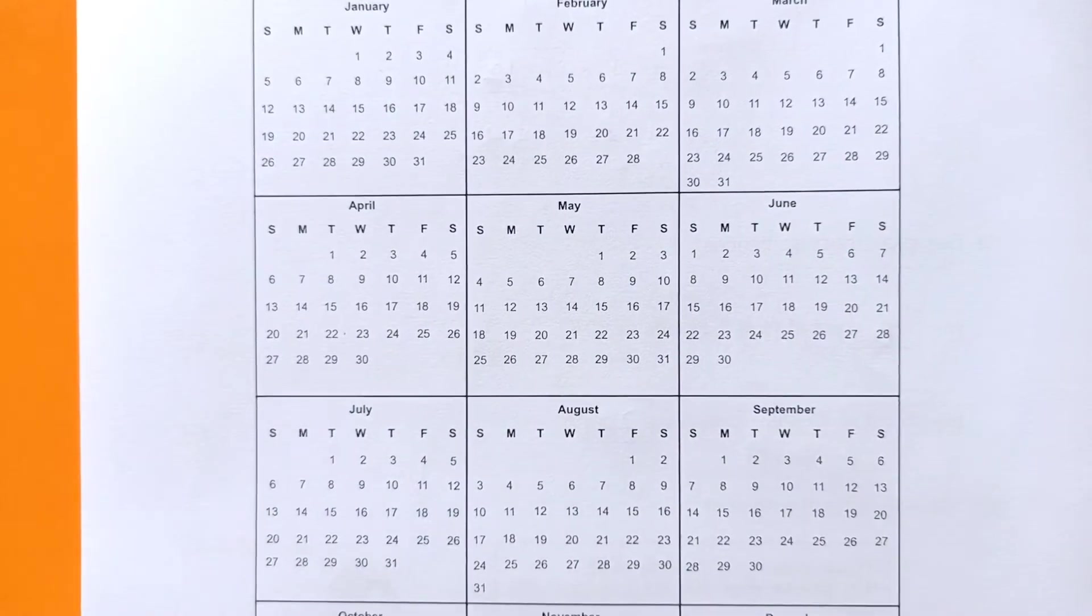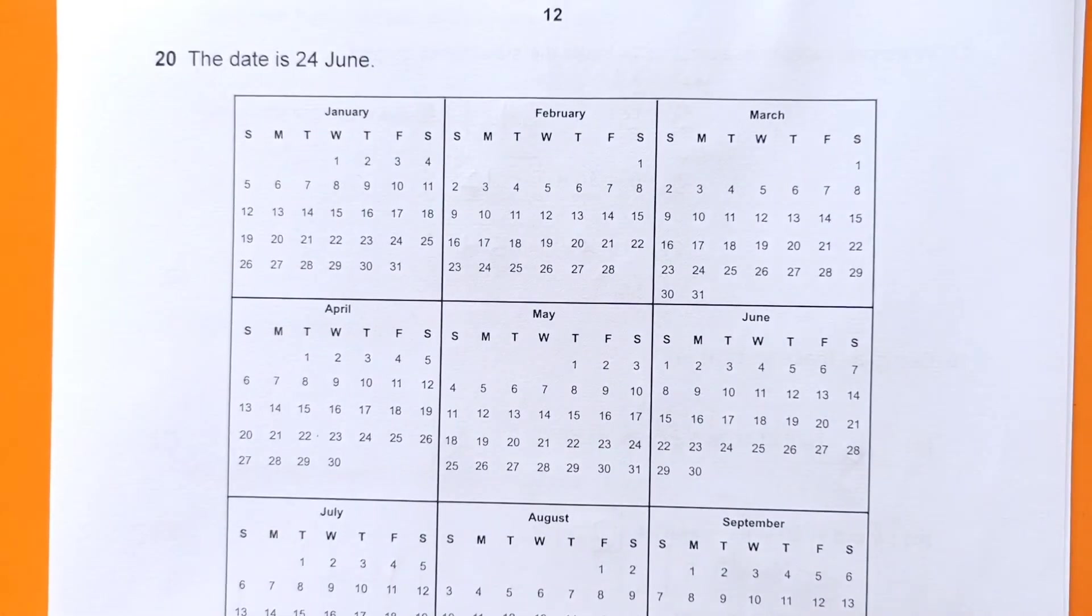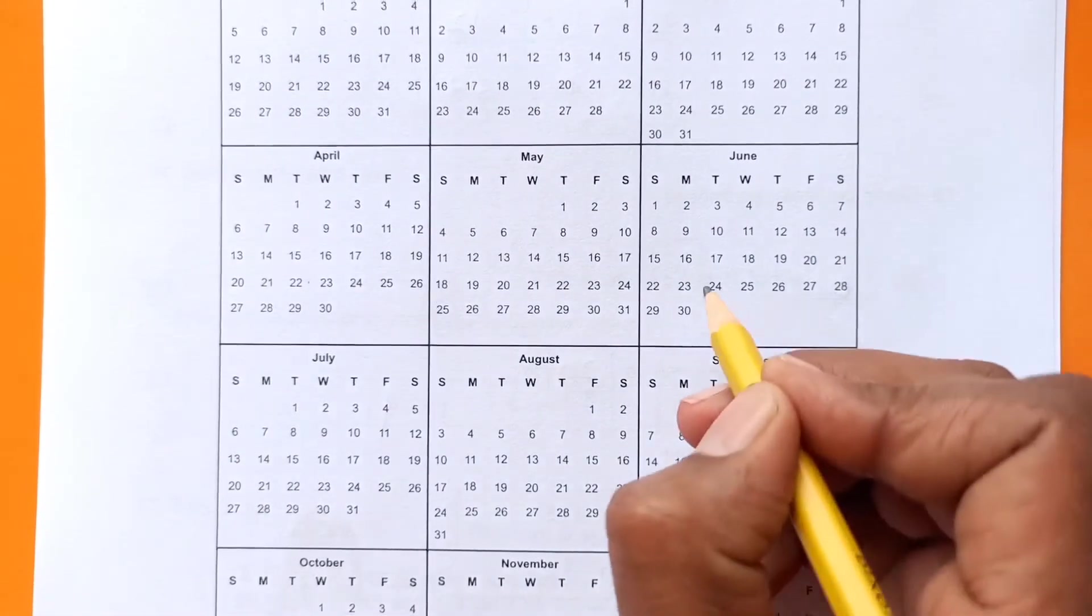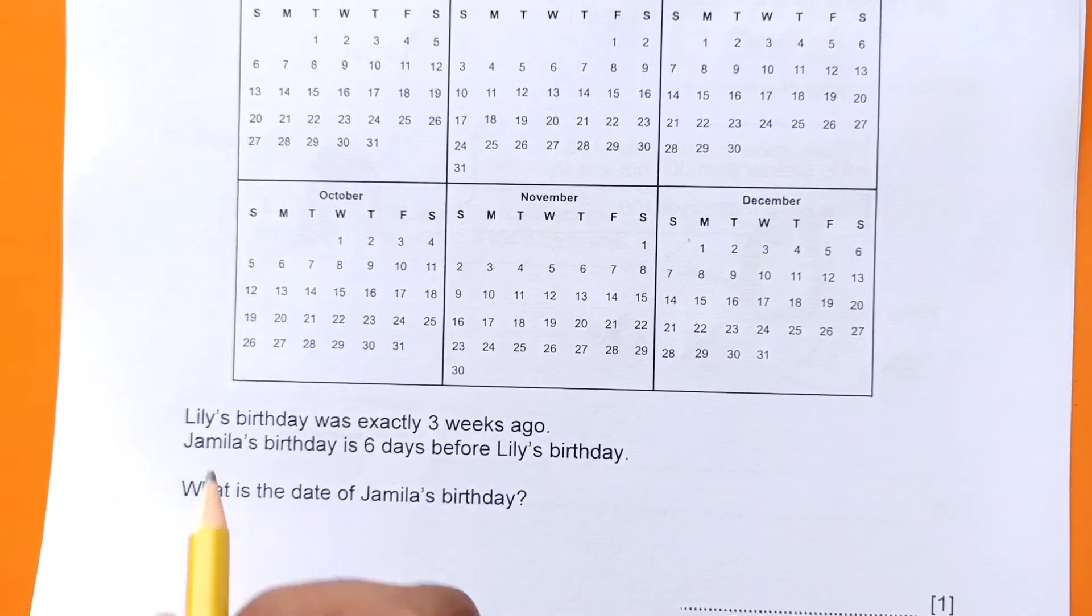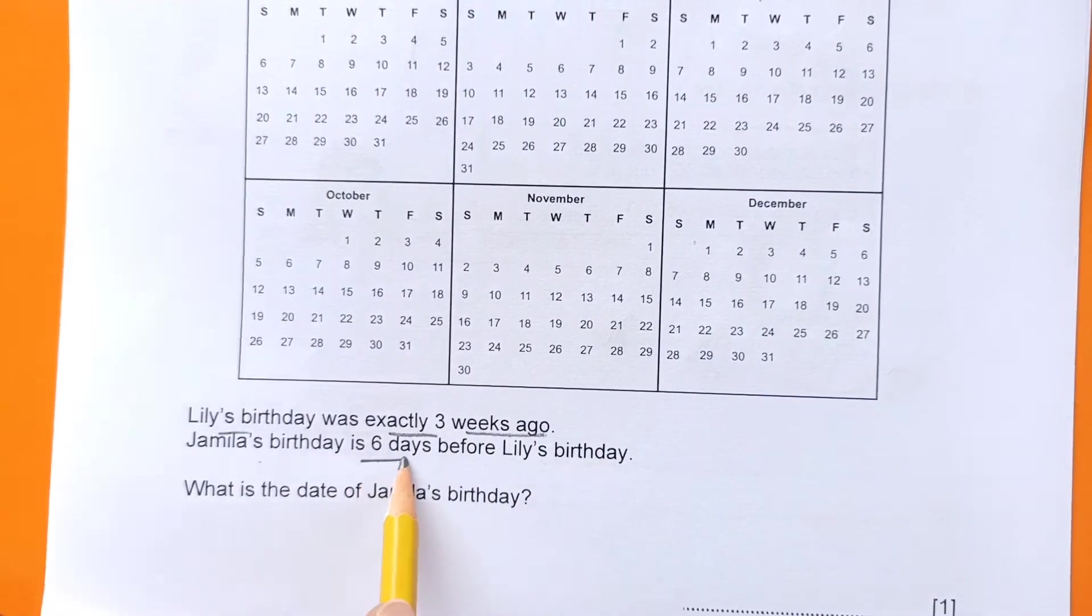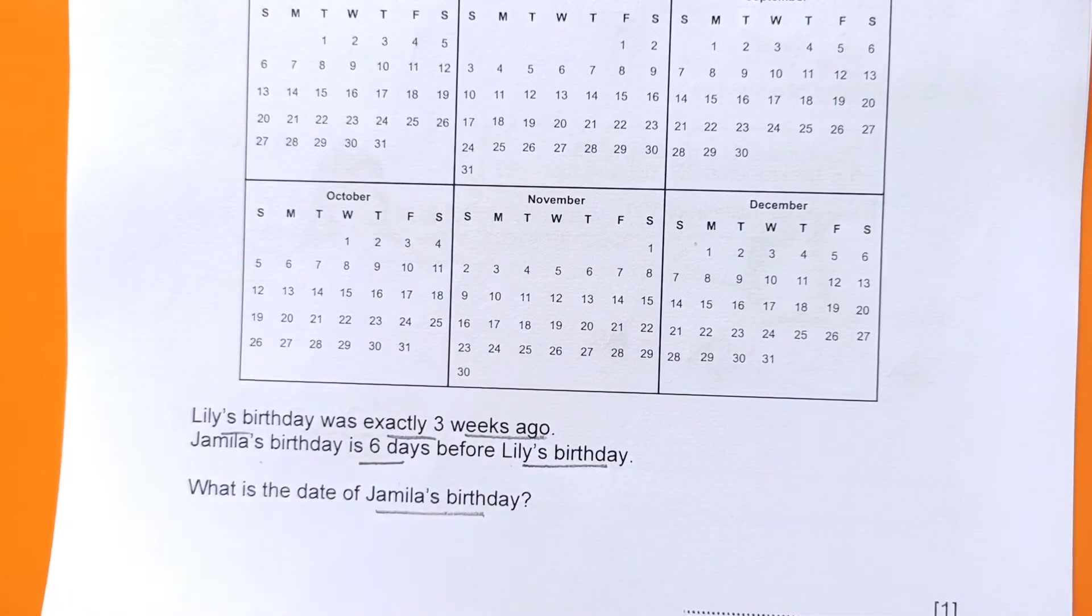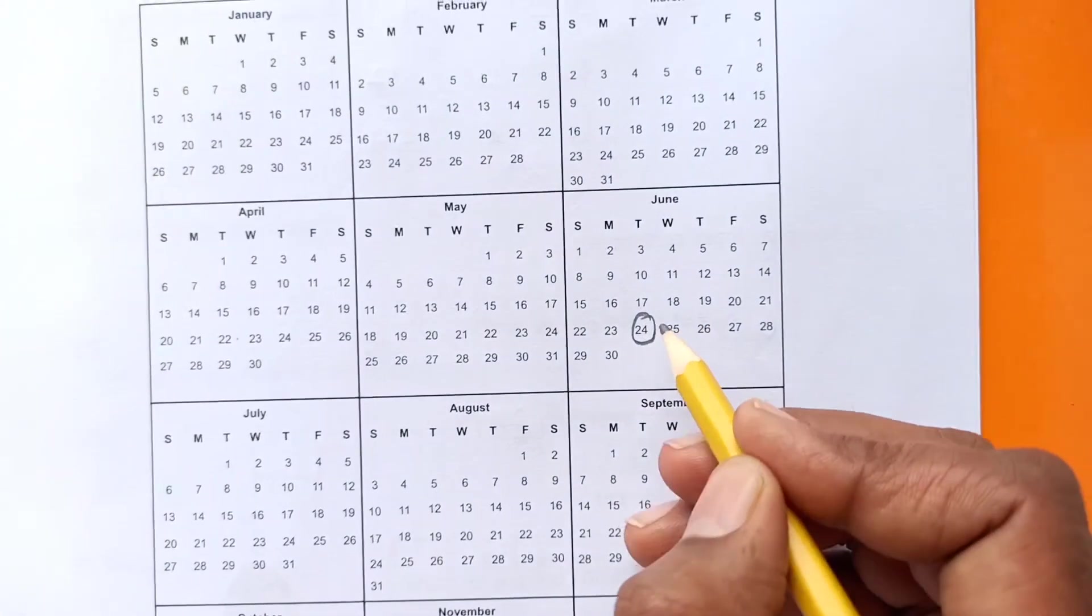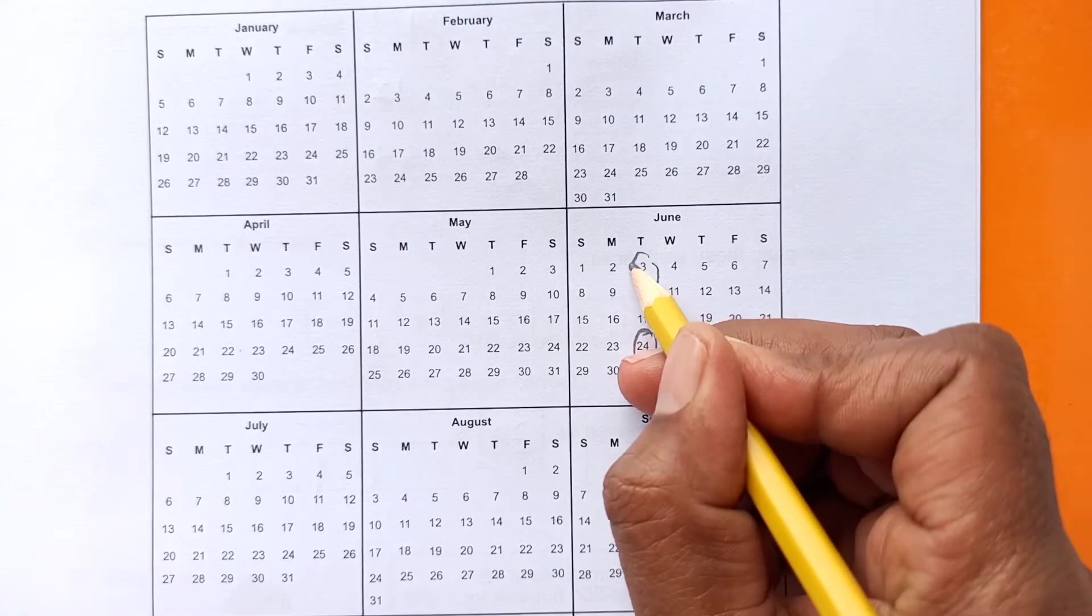Number 20: We have a full calendar here. It says the date is 24th June, so let's move to the month of June - it's 24th. Now let's see the question. Lily's birthday was exactly three weeks ago. Jamila's birthday is six days before Lily's birthday. What is the date of Jamila's birthday?